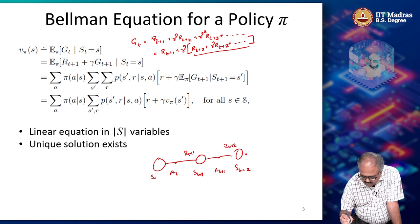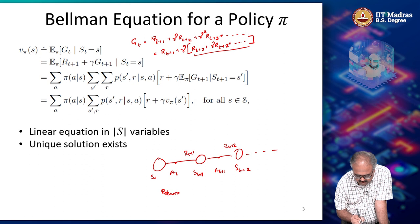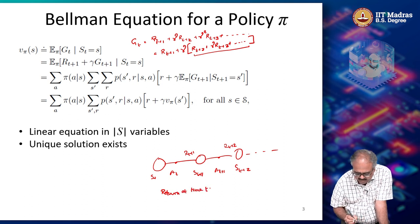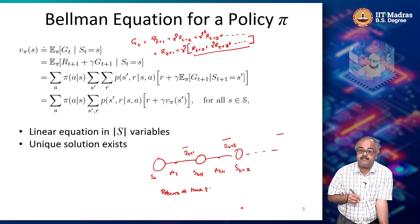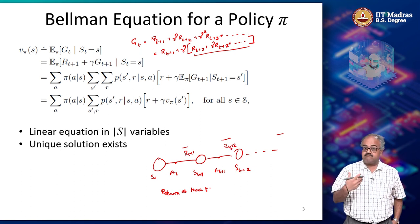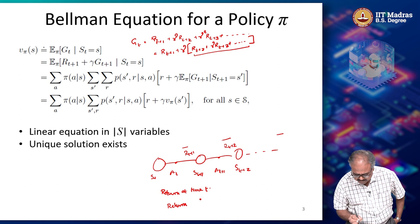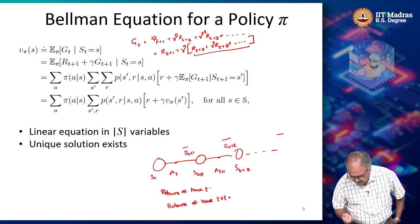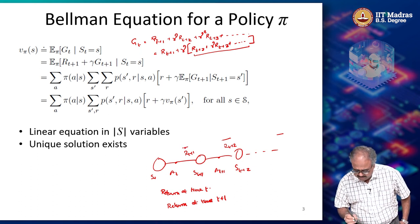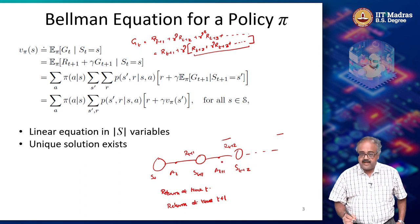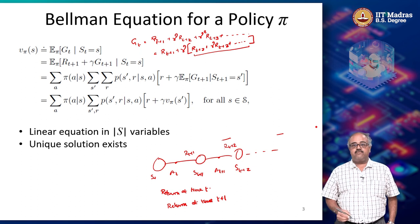We started with some state S_t, then we take action A_t, then we go to S_{t+1} and get R_{t+1}, then take A_{t+1}, go to S_{t+2}, get R_{t+2}, and so on. The return at time t is just the summation of all the rewards from t onwards: R_{t+1} plus gamma times R_{t+2} and so on. Now, suppose I want to write down the return at time t+1. You start from R_{t+2}, then gamma times R_{t+3}, plus gamma squared R_{t+4}, and so on.